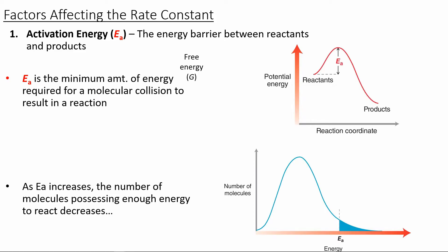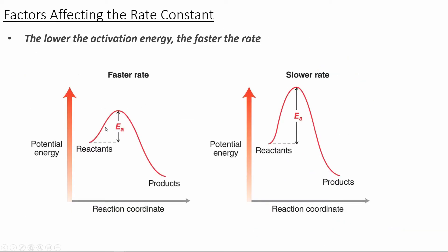On a reaction coordinate diagram, the potential energy is on the y-axis. The activation energy is going to be the energy required for the reactants to overcome this barrier to move to the products — the minimum amount of energy required for molecular collisions to result in a reaction. As the activation energy increases, the number of molecules that have enough energy to react will decrease. If we compare two reactions where the energy of reactants and products stays the same, what changes is the amount of activation energy required. A reaction with a lower activation energy is going to occur at a faster rate.